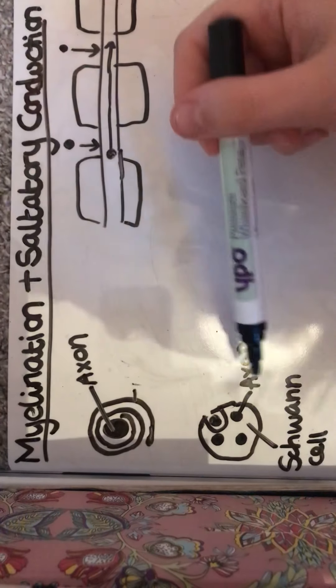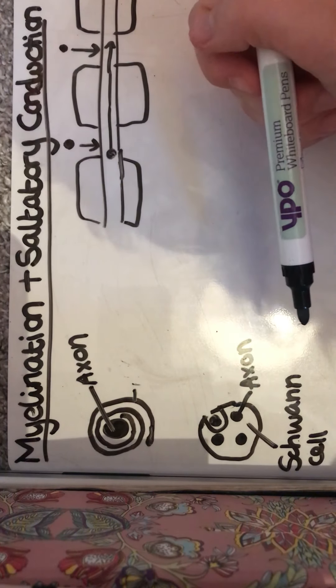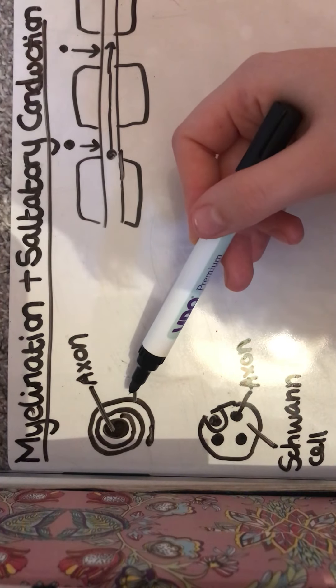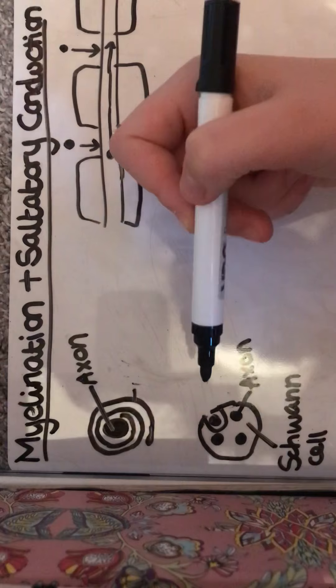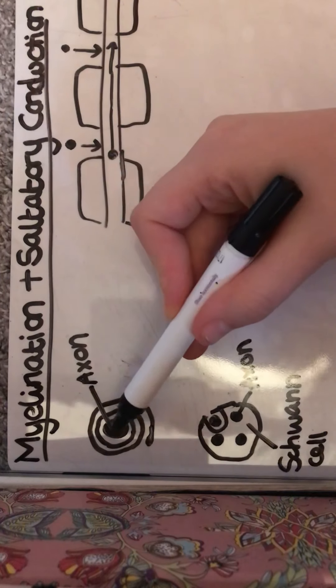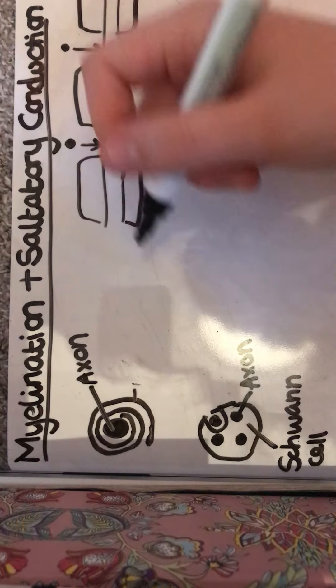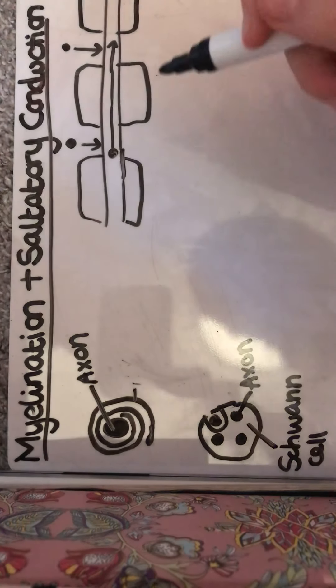If we're looking at the main differences in structure between these two, then for a myelinated neuron we've got the myelin sheath wrapped tightly around the neuron, specifically the axon, so it prevents the movement of ions across the neural membrane.